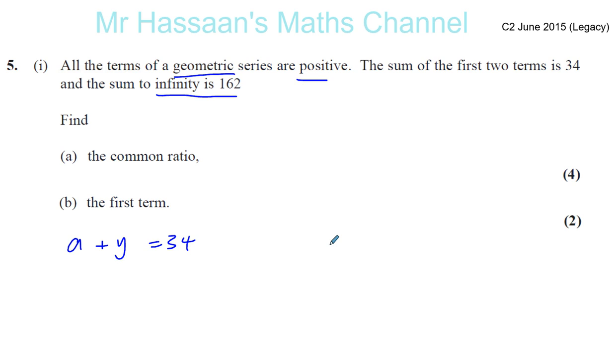We know the common ratio is the term divided by the term before it. So we can say the common ratio is like Y divided by A. That's another thing we can say. This is the first term and this is the second term. We also know the sum to infinity is 162.